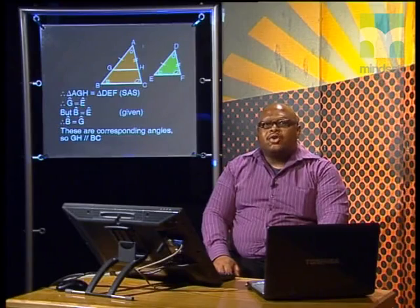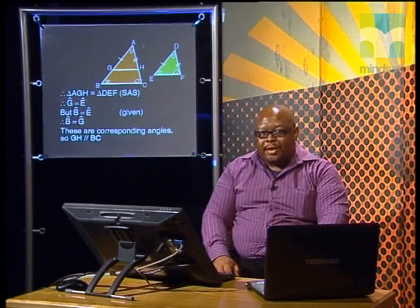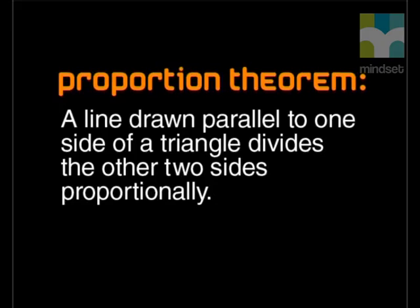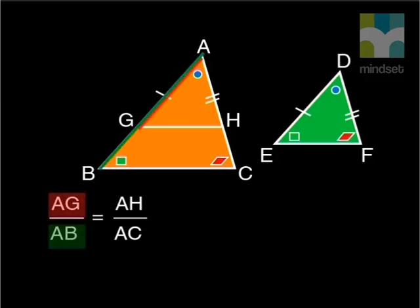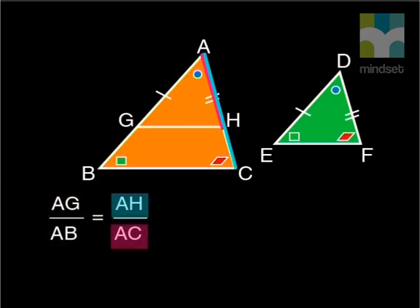And now we are able to make use of the proportion theorem. A line drawn parallel to one side of a triangle divides the other two sides proportionally. AG divided by AB is equal to AH divided by AC by the proportion theorem.